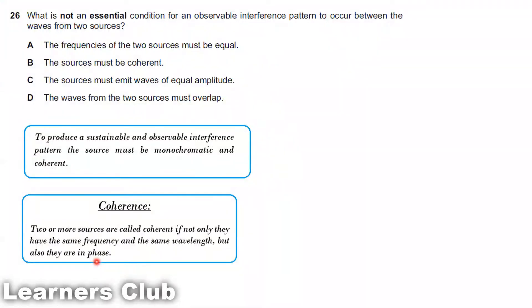To summarize: for an interference pattern, the sources should overlap, be monochromatic with a single wavelength, have the same frequency — which means the same time period and wavelength — and maintain a constant phase difference.